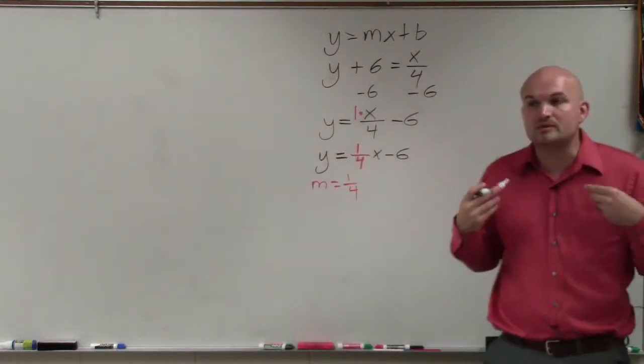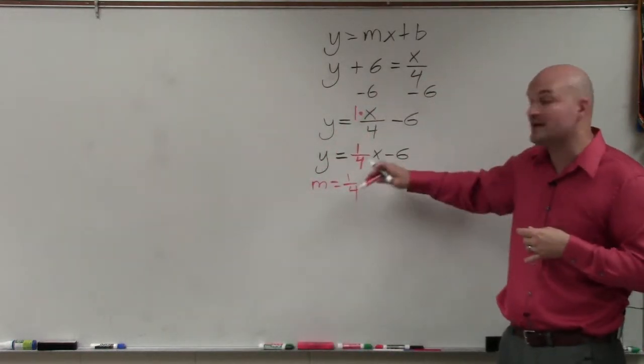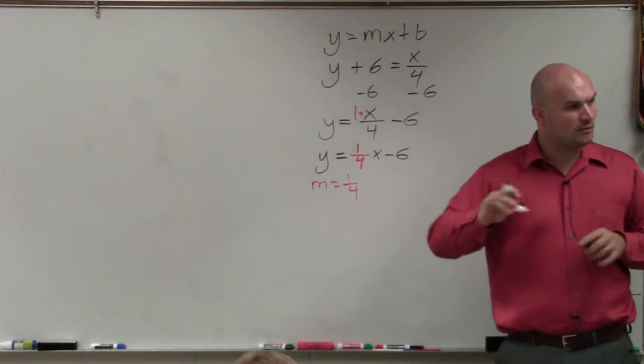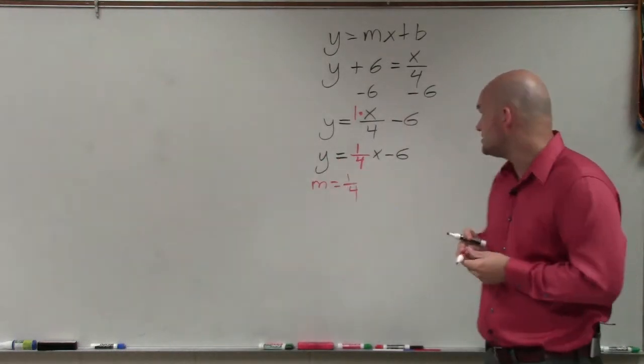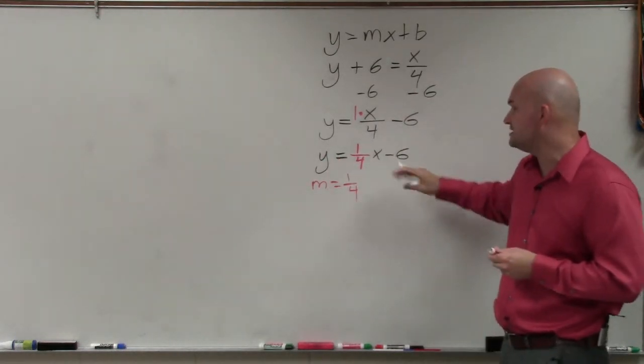And we always want to write our slopes as a fraction. Even if you had a whole number, I would always put it over 1 so it's always a fraction. And then my y-intercept is going to be my coordinate point, where b is negative 6.